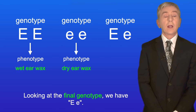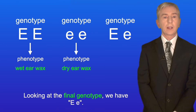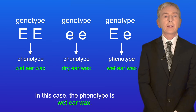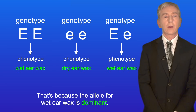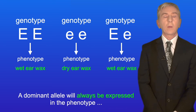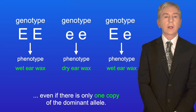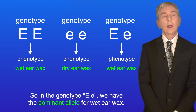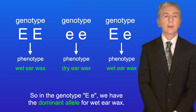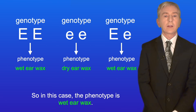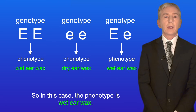Looking at the final genotype Ee, the phenotype is wet earwax. That's because the allele for wet earwax is dominant. A dominant allele will always be expressed in the phenotype even if there's only one copy of the dominant allele. So in the genotype Ee we have the dominant allele for wet earwax, and therefore the phenotype is wet earwax.